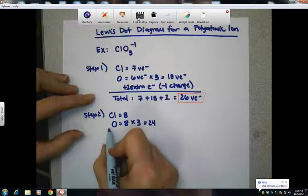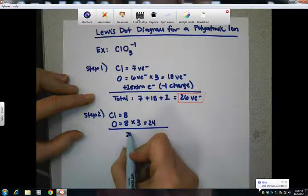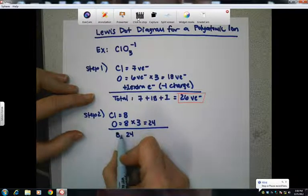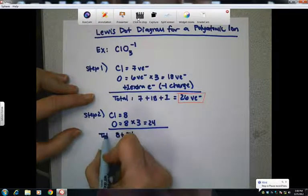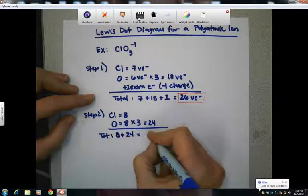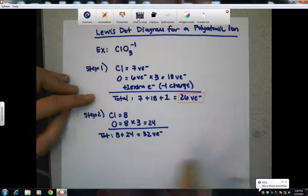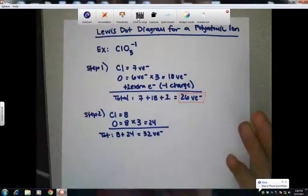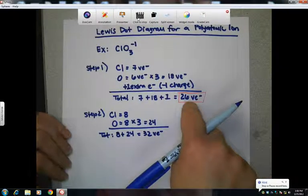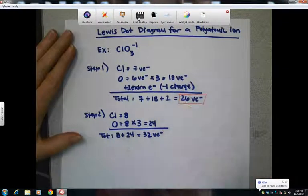And so if we add 24 and eight, so eight plus 24, so our total is going to be 32 valence electrons. So this is what we would have if it were perfect. This is what we have. So we're going to have to try to work with our 26 here.